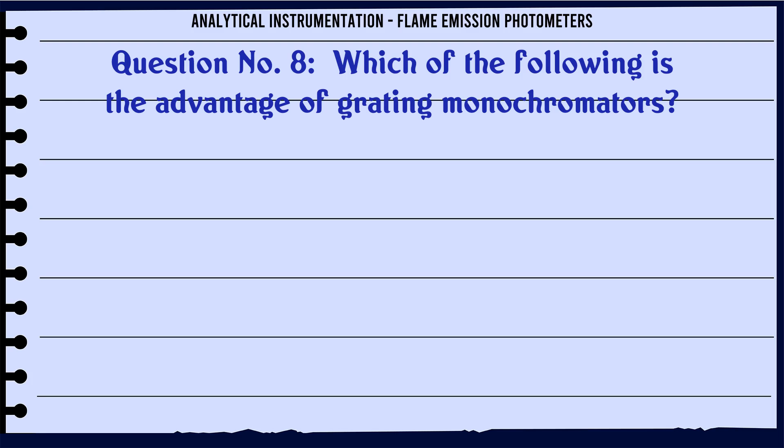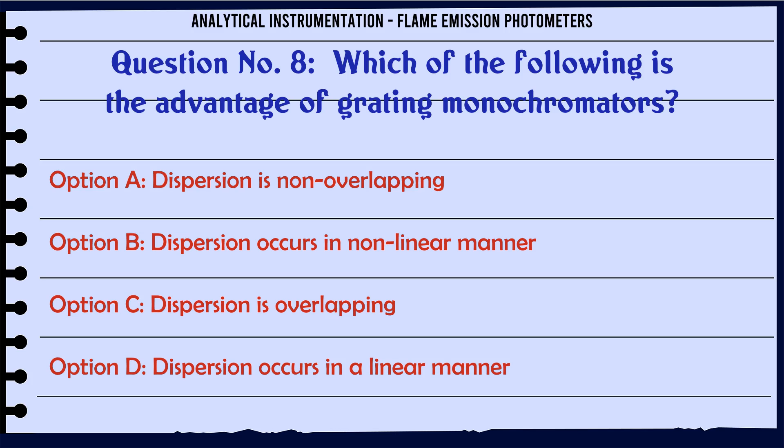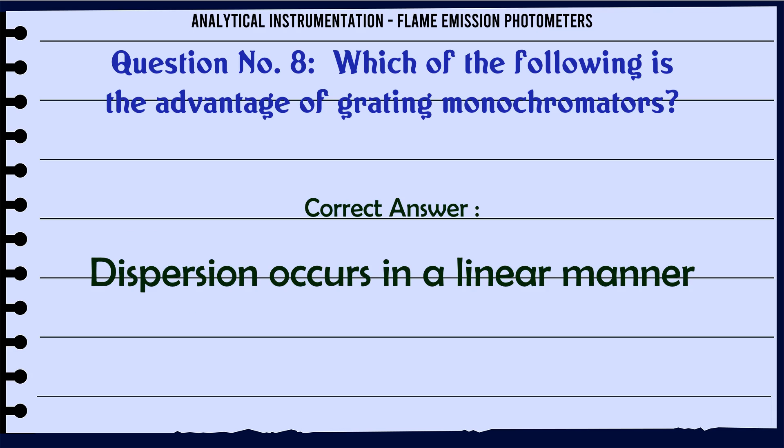Which of the following is the advantage of grating monochromators? A. Dispersion occurs in a non-linear manner. C. Dispersion is overlapping. D. Dispersion occurs in a linear manner. The correct answer is: Dispersion occurs in a linear manner.